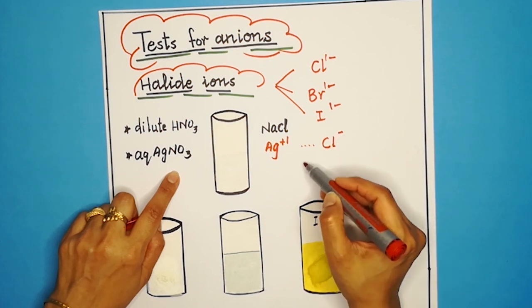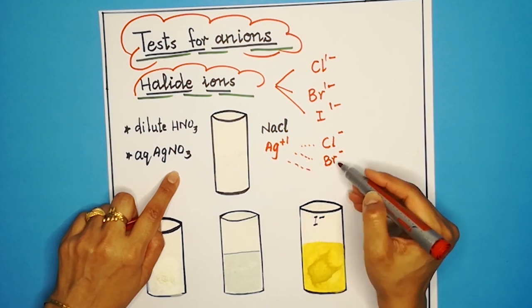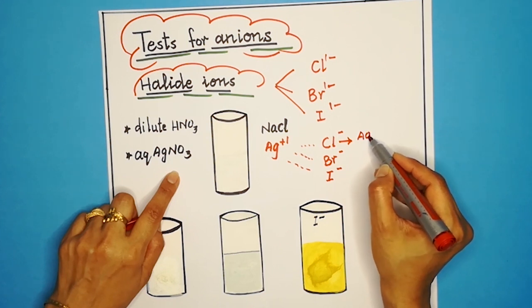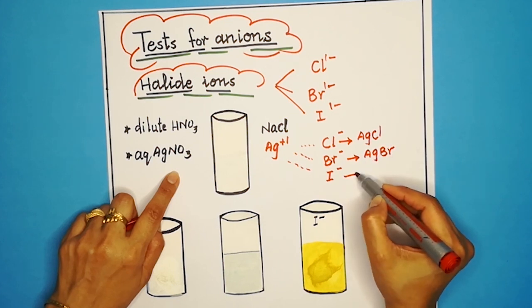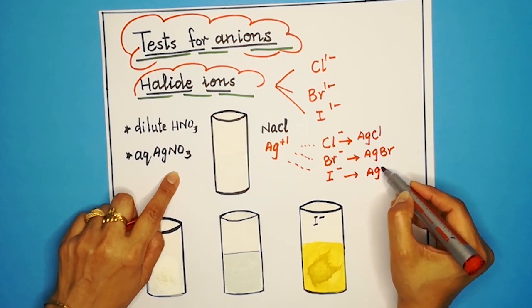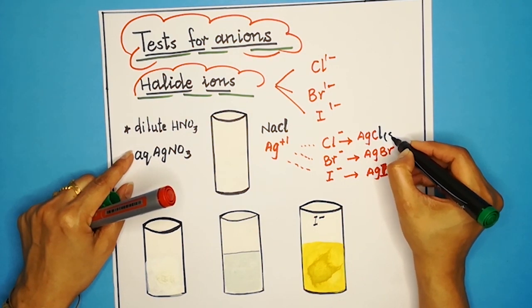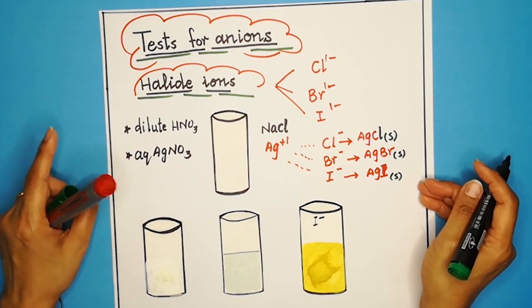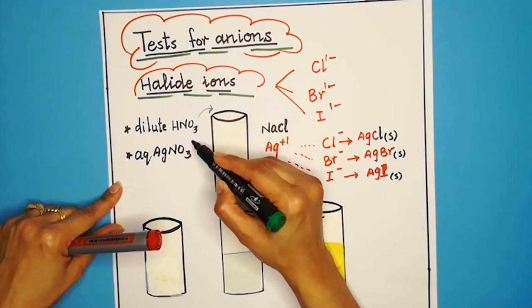The silver ion can react with chloride ions to form silver chloride, with bromide ions to form silver bromide, or with iodide ions to form silver iodide. We use silver nitrate because all silver halides are insoluble and form precipitates, giving us a specific identification of the halide ion present.